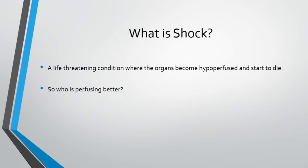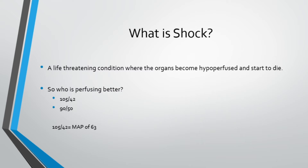What if I gave you two patients and asked you who is perfusing better? Would it be the patient with a blood pressure of 105 over 42, or the patient with a blood pressure of 90 over 50? The patient with 105 over 42 has a MAP of 63, and the patient with 90 over 55 has a MAP of 67. So the correct answer is the patient with 90 over 55.